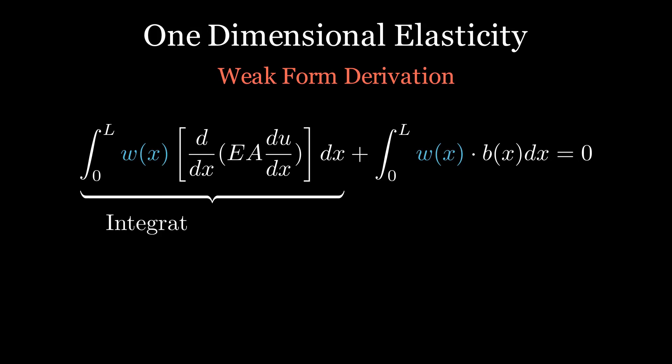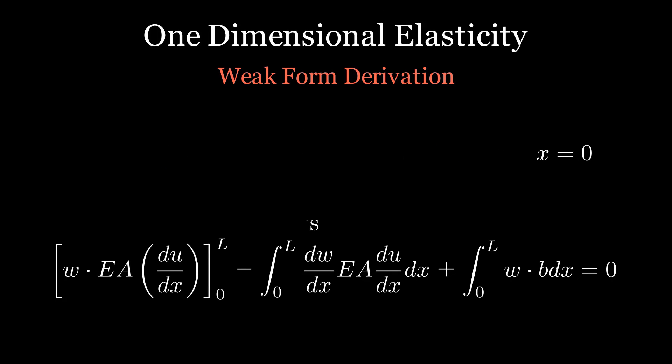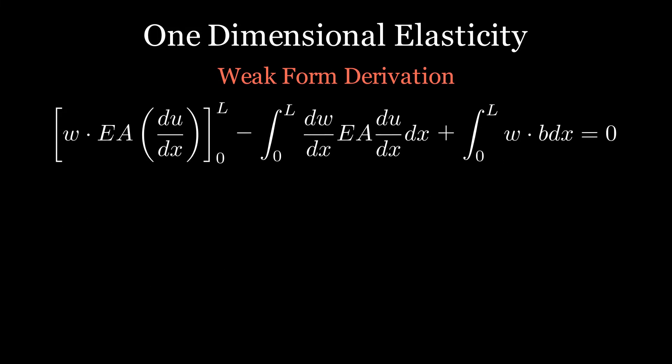For this reason, we will apply the integration by parts to transform the first term into a form that contains only first derivatives. This will give us symmetric stiffness matrix and also allows us to use some less smooth trial functions.